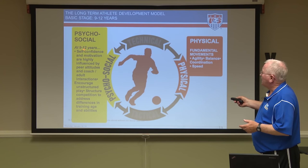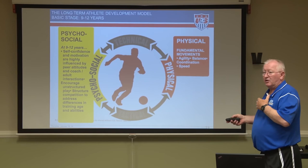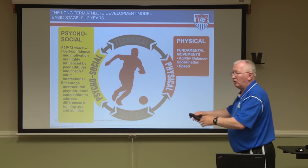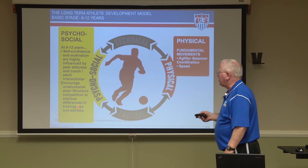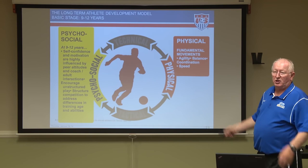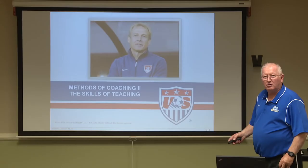Nine to twelve years — self-confidence and motivation are highly influenced by peer attitudes and the coach-player or adult relationship. Those interactions with you and your assistant coaches matter enormously. Nine to twelve year olds need encouragement of unstructured play, and structured competition should address differences in training age and abilities. The physical side: soccer deals with agility, balance, coordination, and speed constantly. This age is as important as any other.